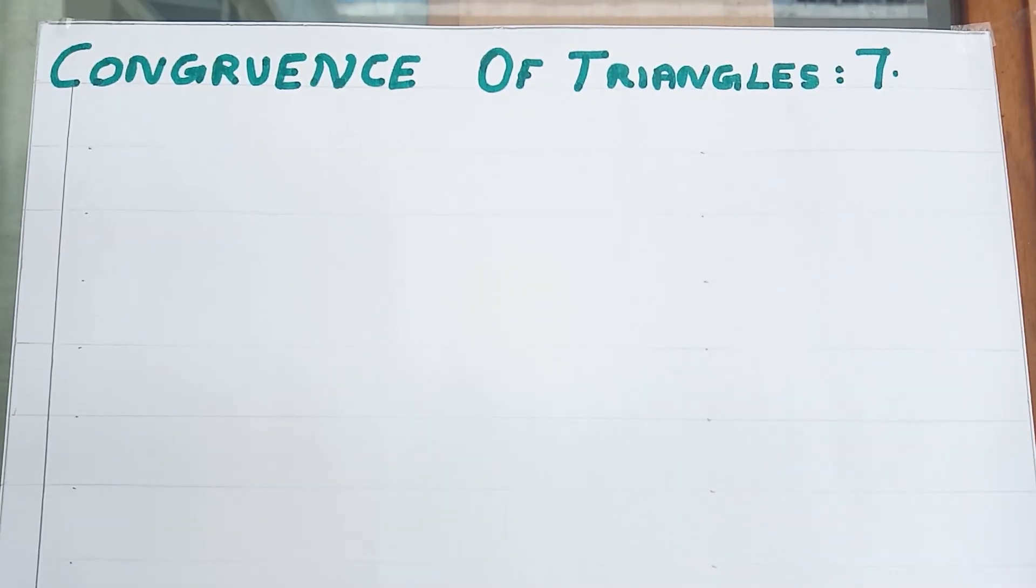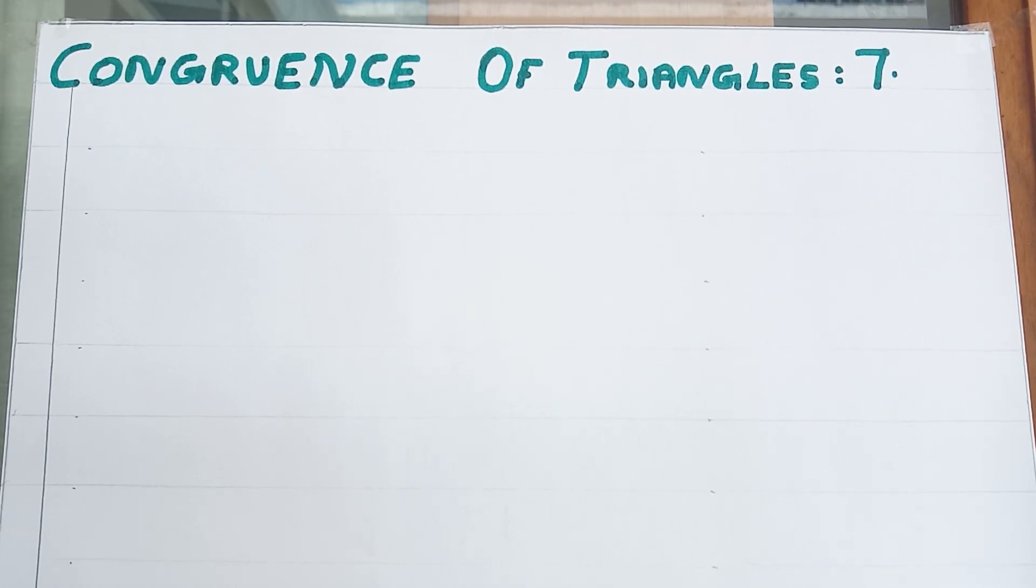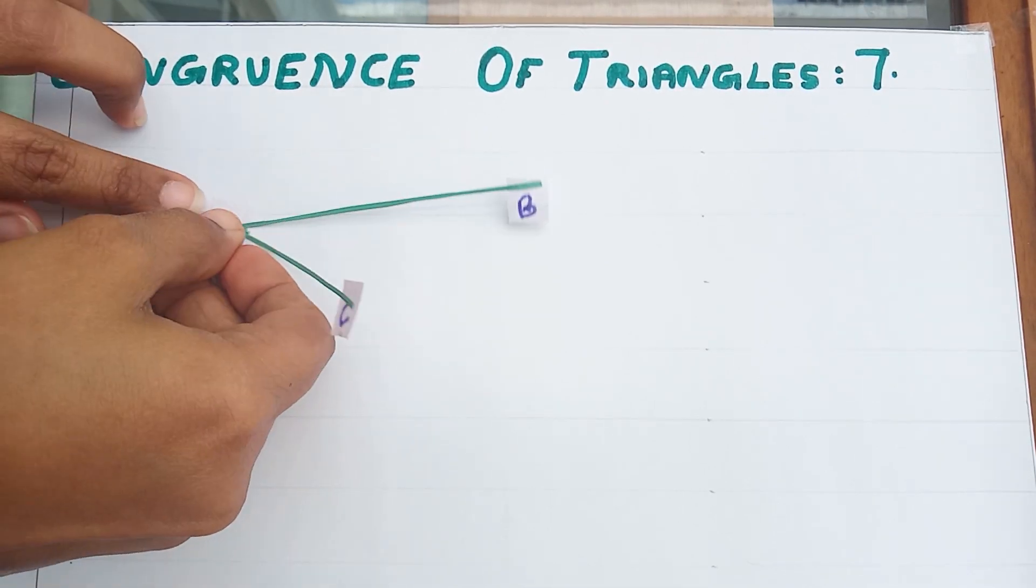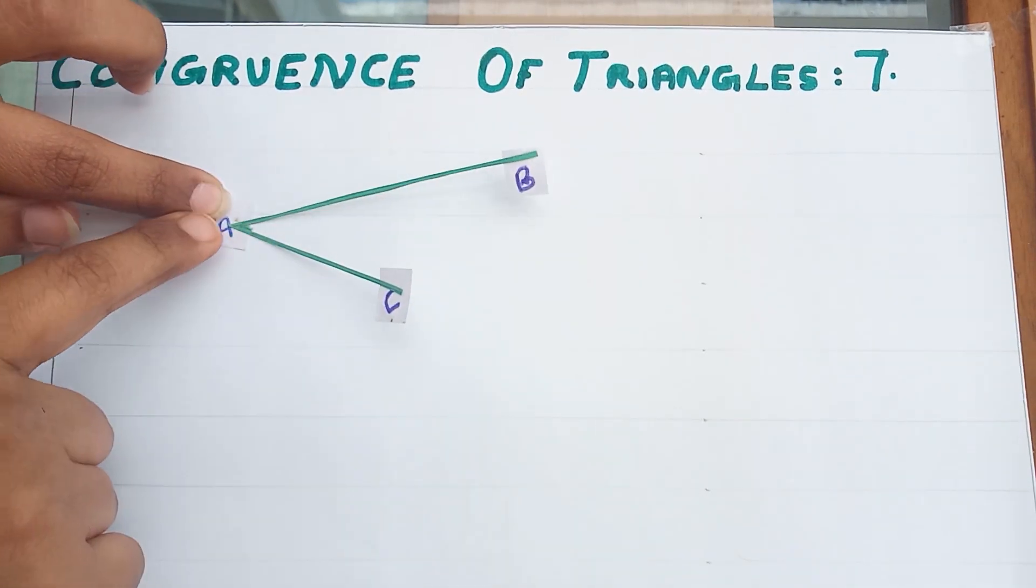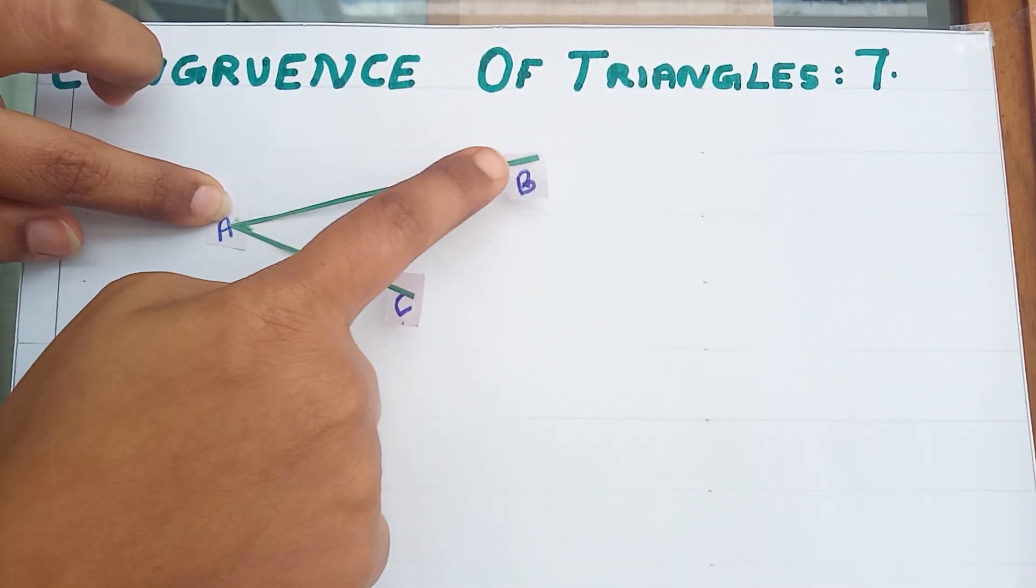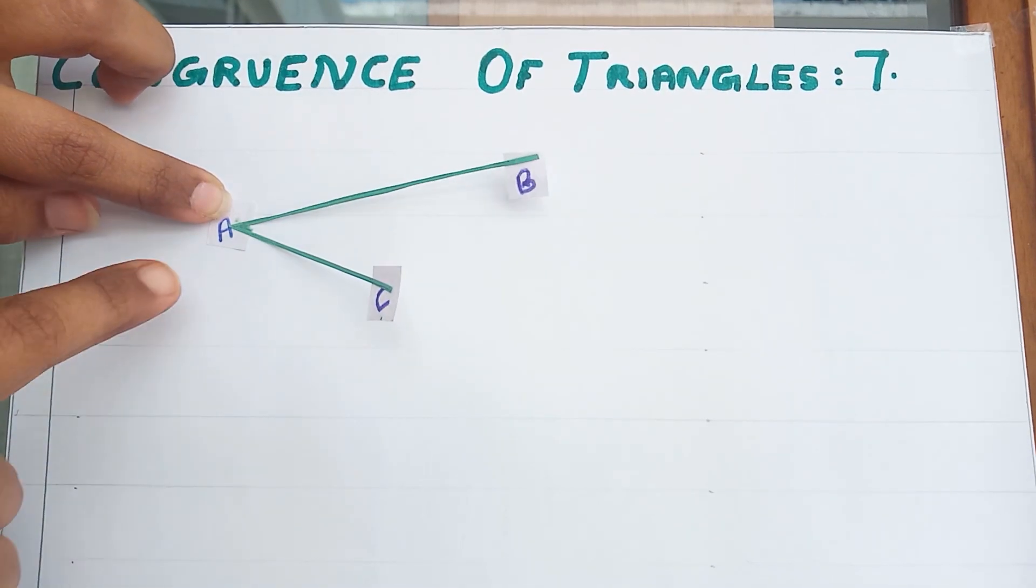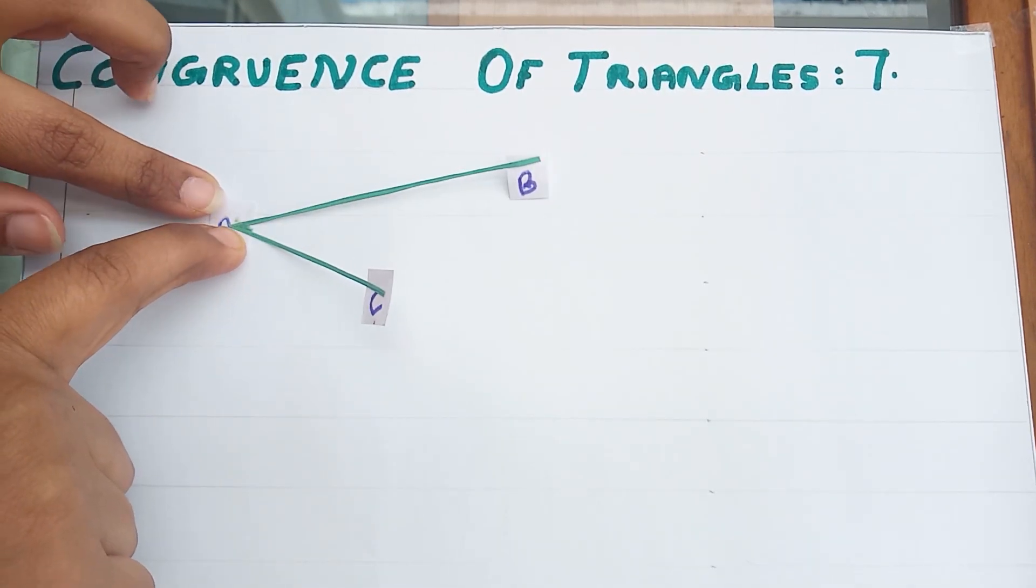To study the congruency between two angles I have brought a pair of angles. First angle is angle BAC. AC and AB are the arms of this angle and A is the vertex of this angle.